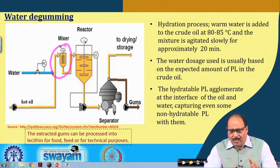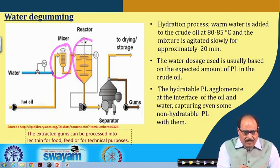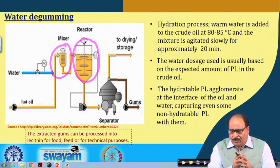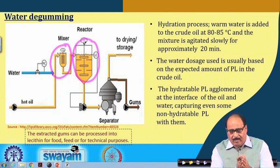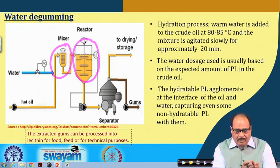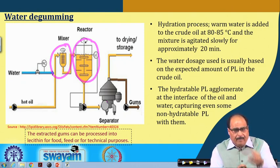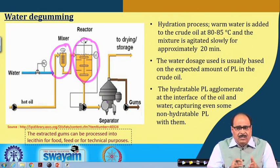In the reaction vessel, the hydratable phospholipids agglomerate at the interface of the oil and water, and may also capture some of the non-hydratable phospholipids with them. After the reaction time, the hydratable phospholipids precipitate and are removed in the next step using an appropriate separation method, normally centrifugation.